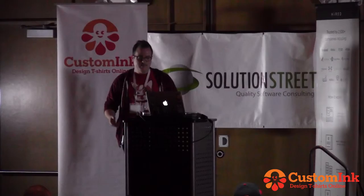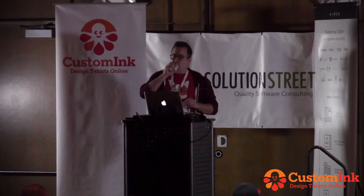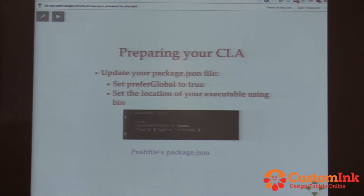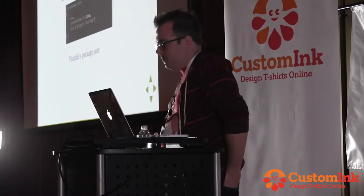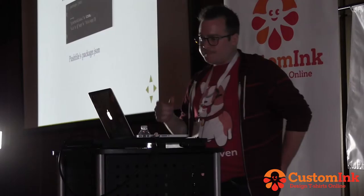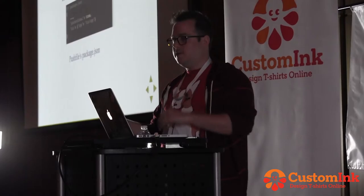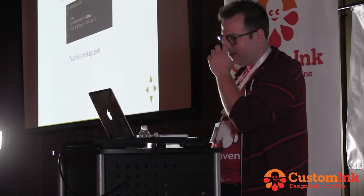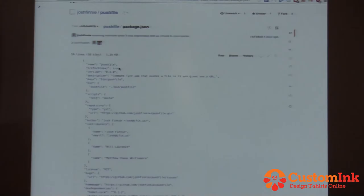Now to the meat of the talk: how to actually publish a Node command line app to NPM. With those 200,000 packages on NPM, people are actually writing and publishing these all the time, and it's actually surprisingly easy to do. These are the four steps to go through the publishing process. First, you want to prepare your command line app. In package.json, there's a preferGlobal true flag and a bin option. These allow you to have your command line app preferred to be global — so if you've ever seen when you install an app like Gulp, it says this is preferred to be installed with -g. The bin is where your executable is.